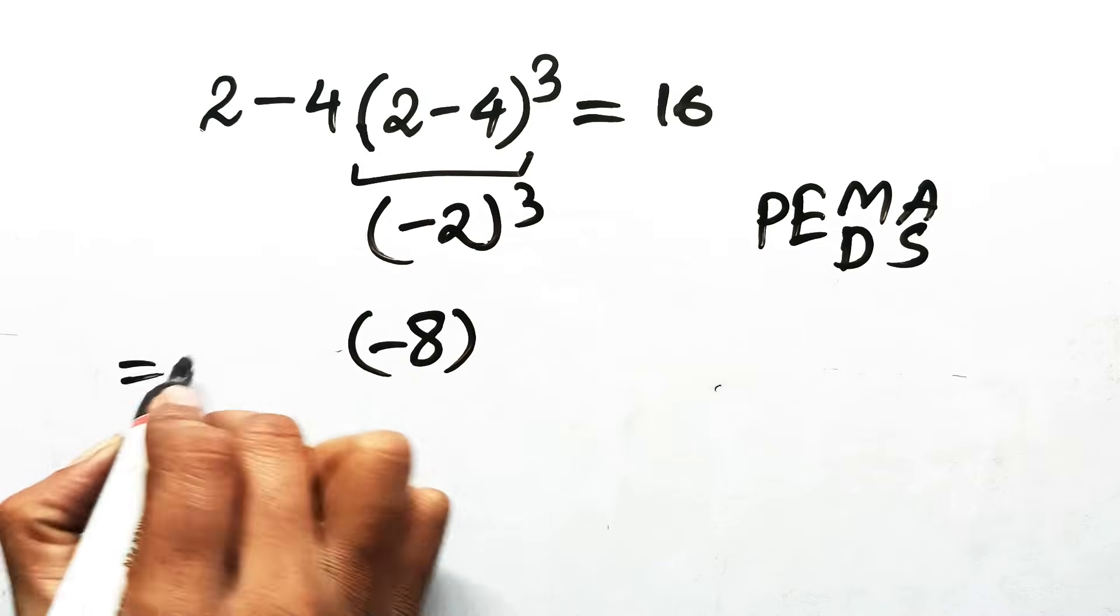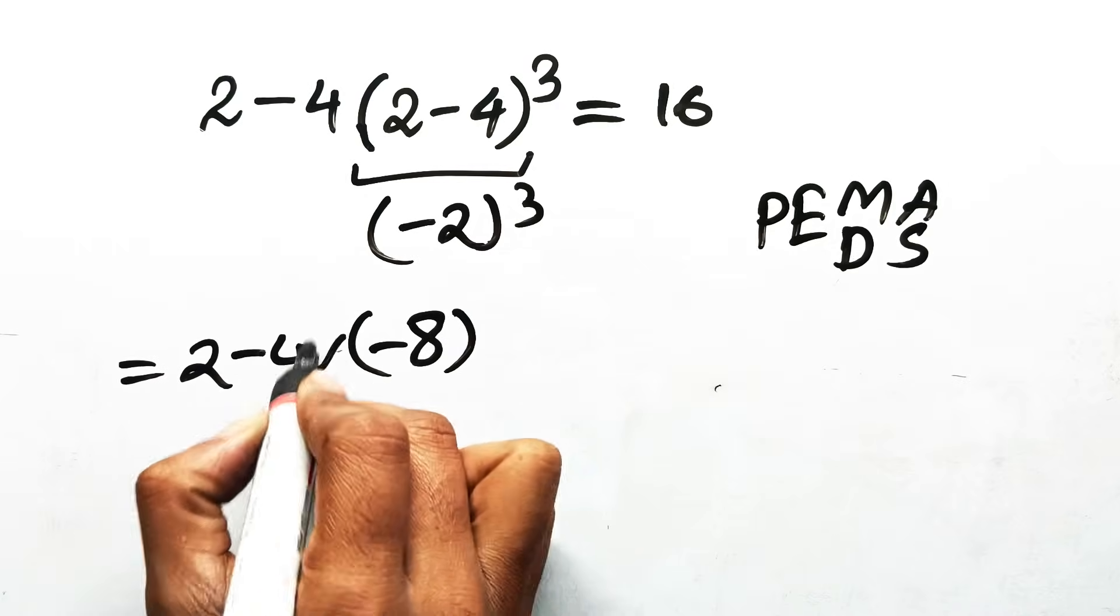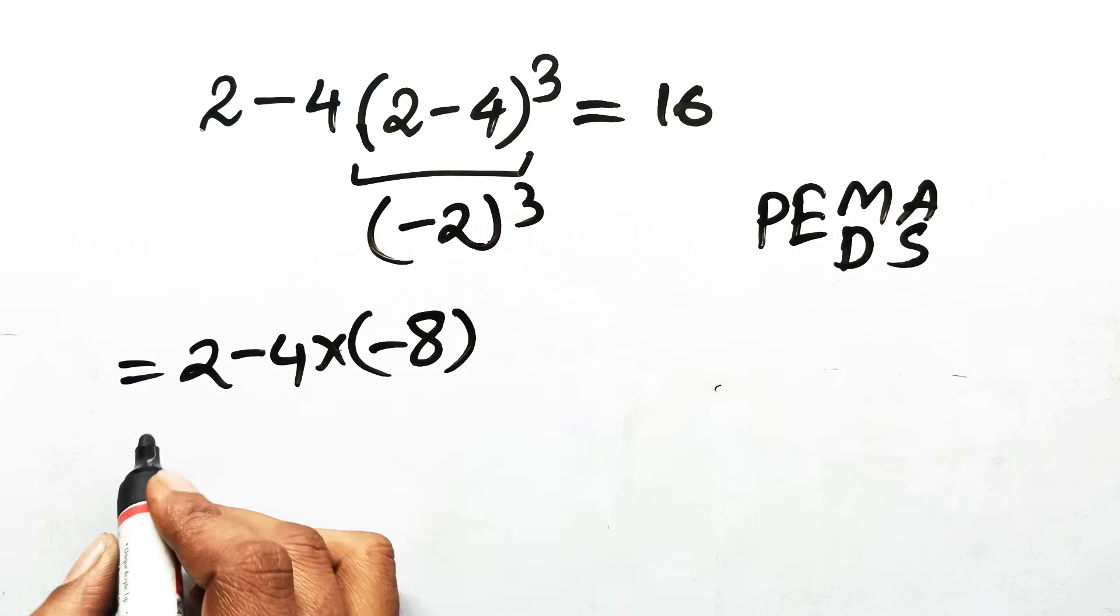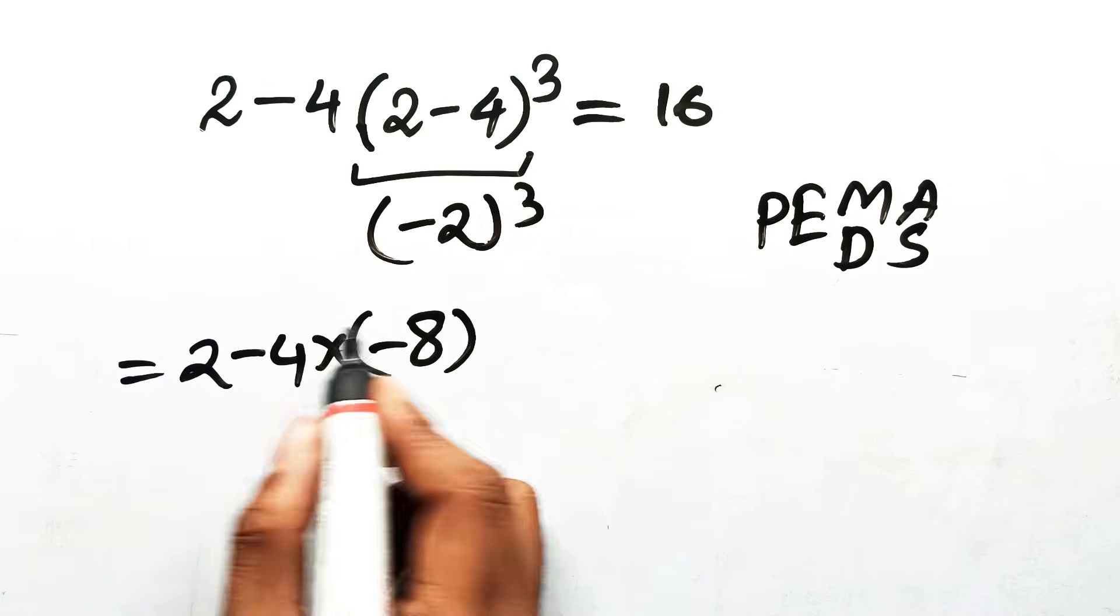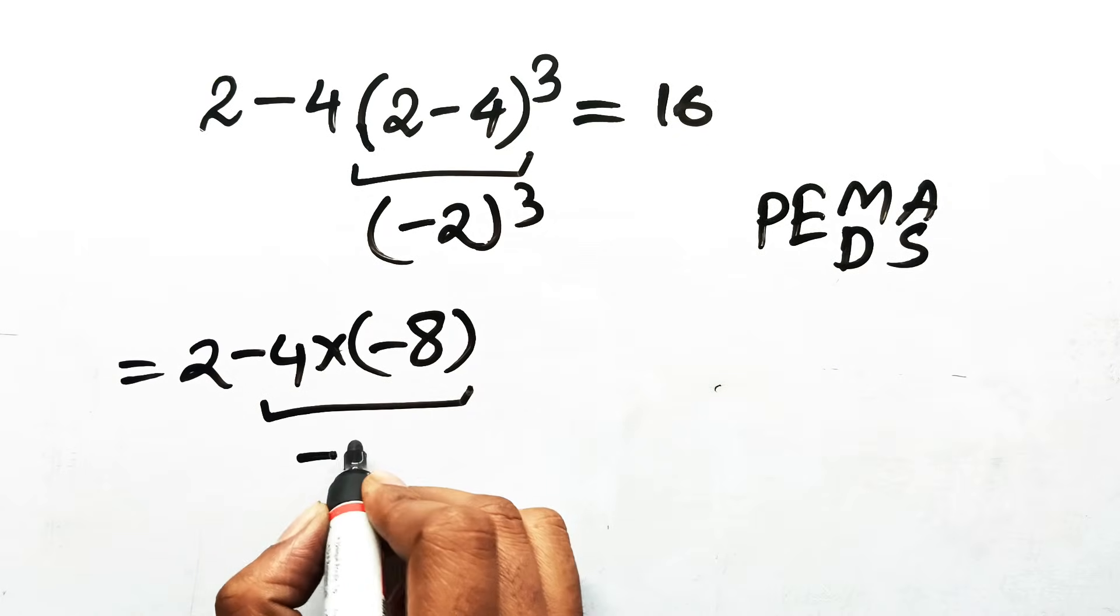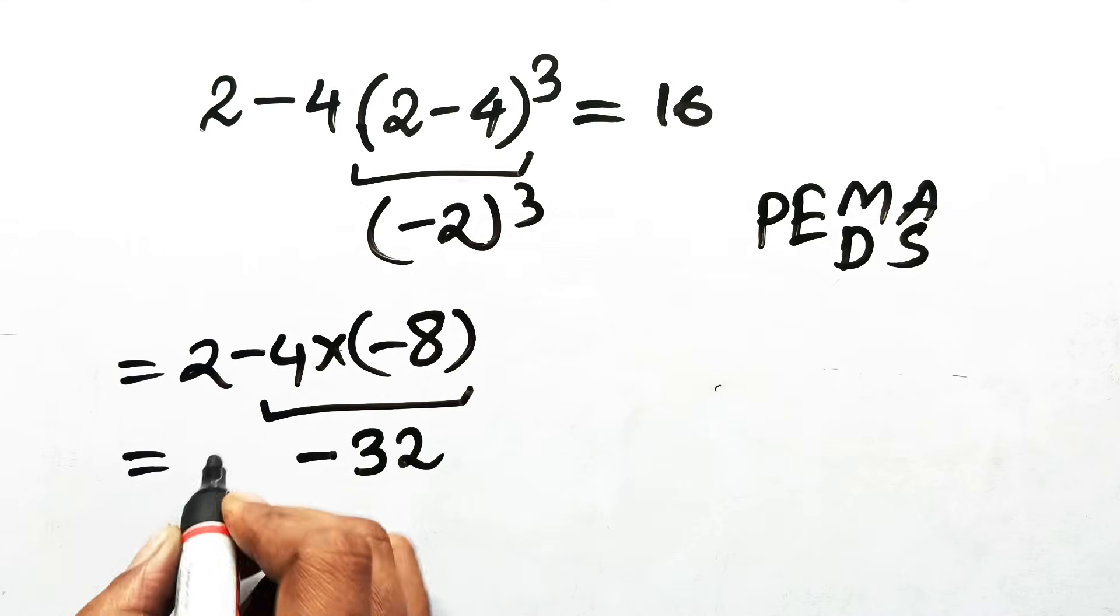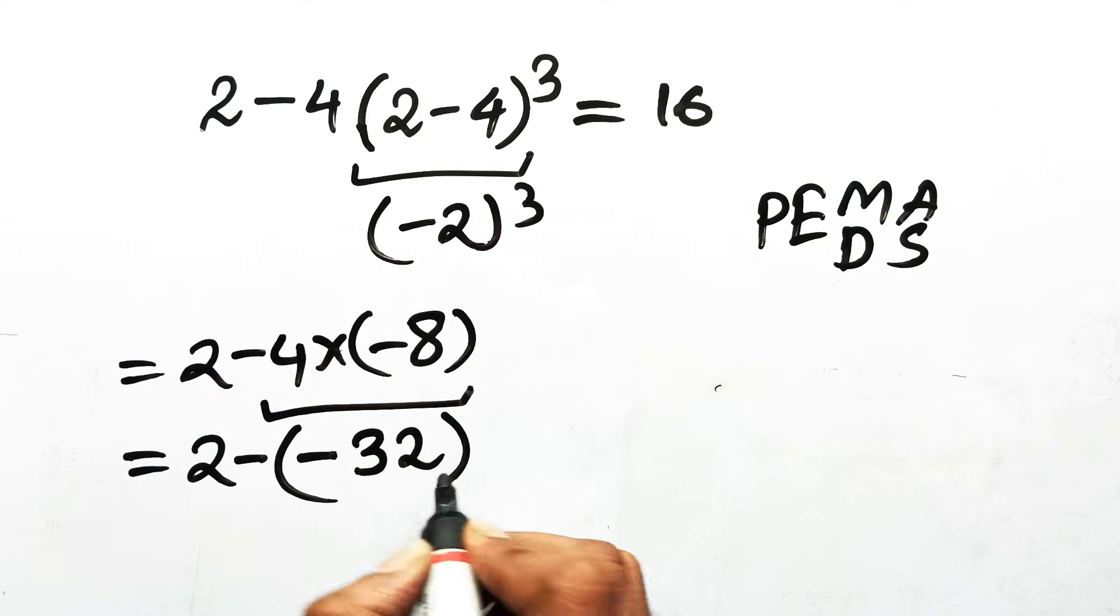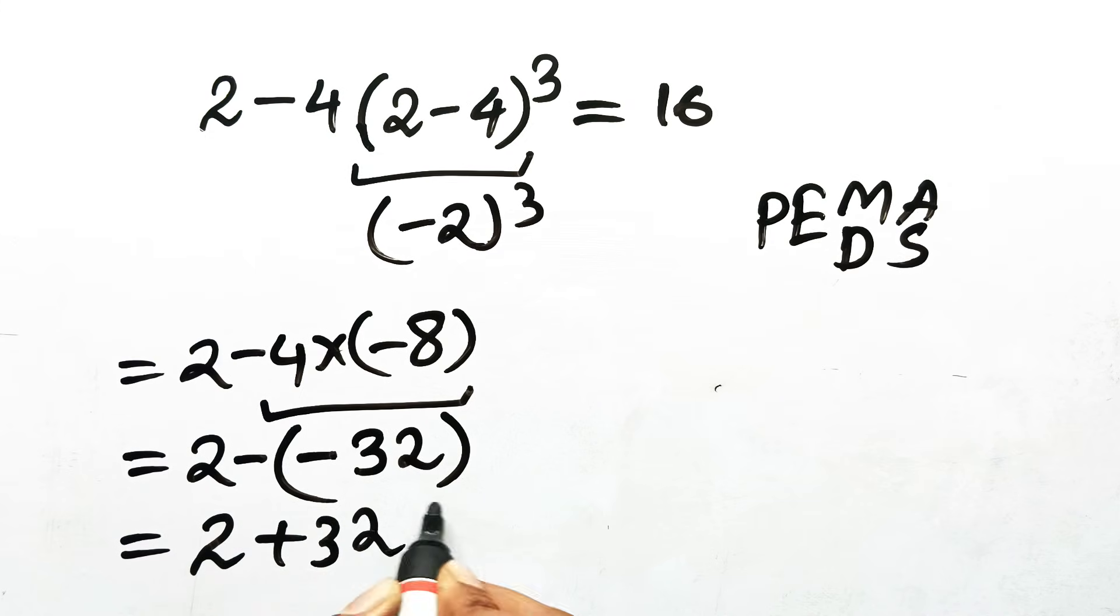Now the expression becomes 2 minus 4 times negative 8. Next comes multiplication, because multiplication happens before subtraction. 4 times negative 8 is negative 32. Now the expression is 2 minus negative 32. And subtraction of a negative turns into addition, so 2 plus 32 equals 34.